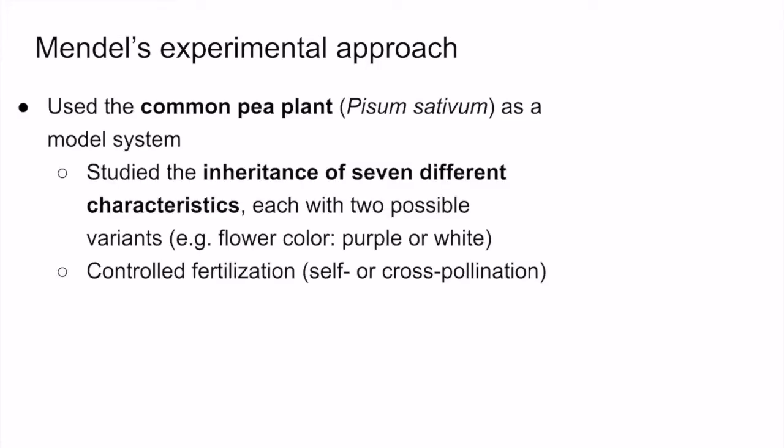So to begin, I just want to give an overview of how Mendel designed and approached his experiments. Mendel used the common pea plant as a model system for his research. In general, in biology, a model system is a system that is suitable or convenient for studying and understanding biological processes, because they have features that make them ideal for study. There are several reasons why pea plants are suitable for genetic research and why Mendel chose to use them.